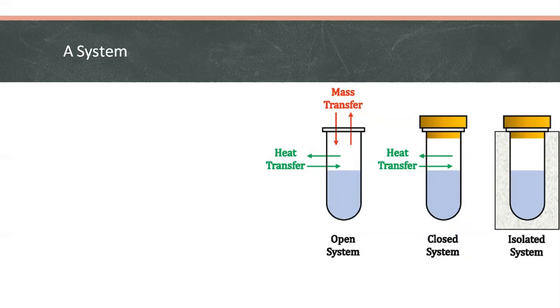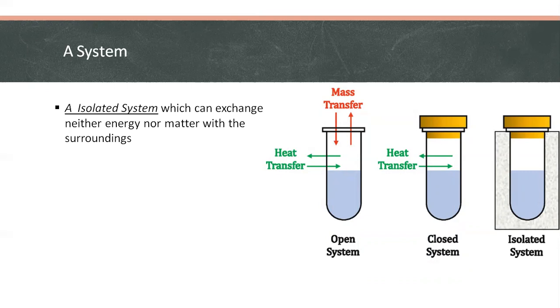A system may be an isolated system which cannot exchange neither energy nor matter with the surroundings, such as an insulated bomb calorimeter.